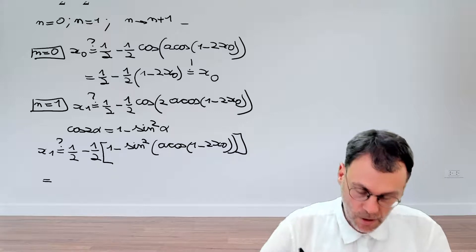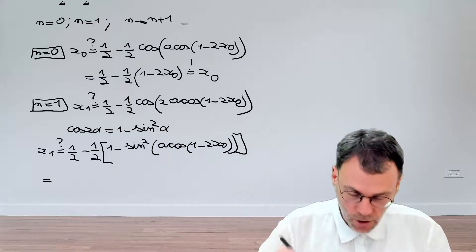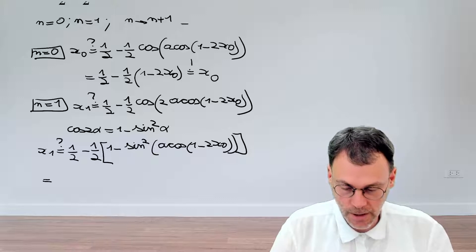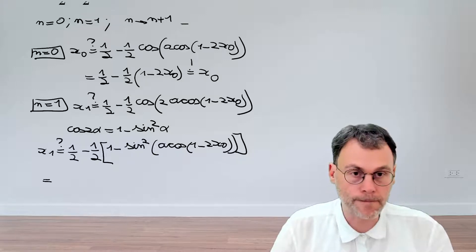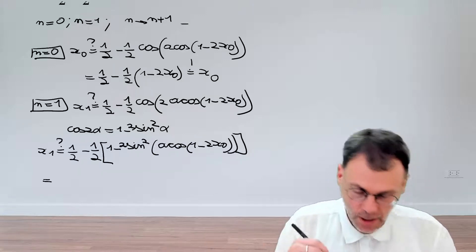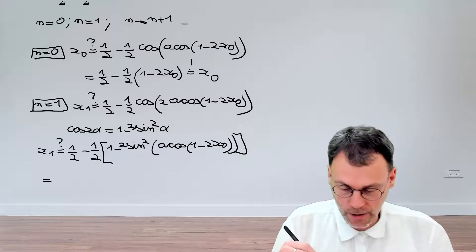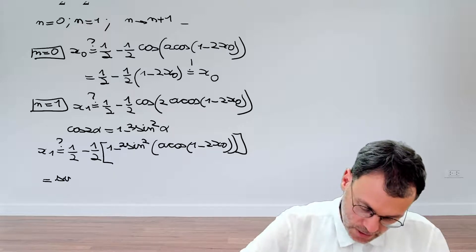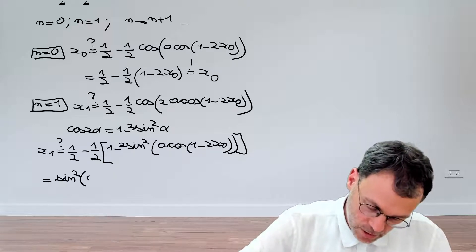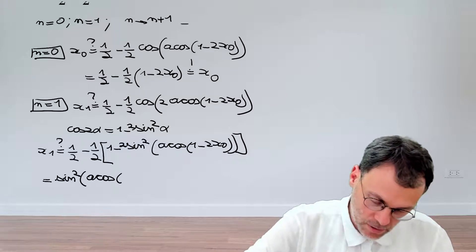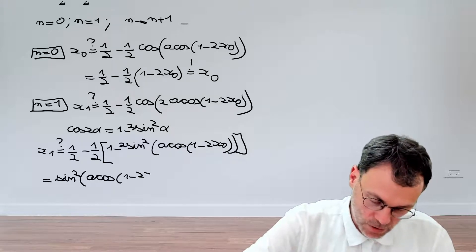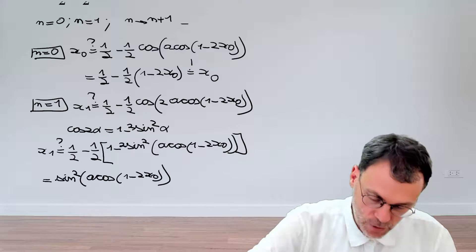We can clean this up — all the junk in front cancels — so we have sine squared of arc cosine of one minus two x₀.